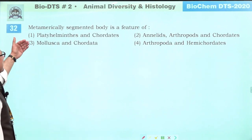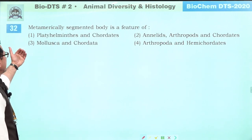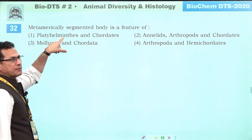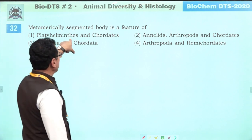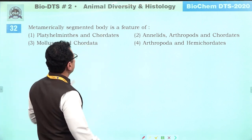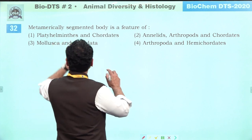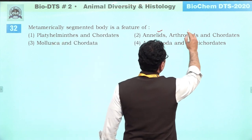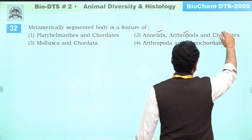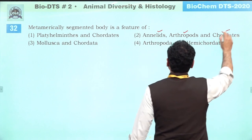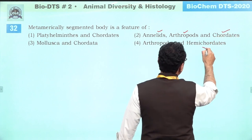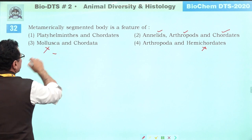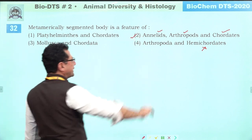Metamerically segmented body: Platyhelminthes show pseudo-metamerism. True metamerism is in Annelida, Arthropoda, and Chordates. Hemichordates and Mollusca do not show metamerism. So the correct answer is Annelida, Arthropoda, and Chordates — second answer.